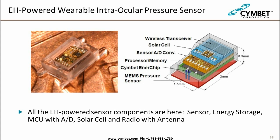The intraocular pressure sensor, developed at the University of Michigan, is a four-layer stack in a one-millimeter-cubed package. The bottom layer is a MEMS pressure sensor measuring pressure in an eyeball for glaucoma patients. It transmits this pressure value to a wand held in front of the eye. On top is a Simbit Enerchip battery, then an ultra-low power microcontroller with ADC for the pressure sensor, and on top a small solar cell and wireless transceiver — a great example of a tiny energy-harvesting powered IoE device.